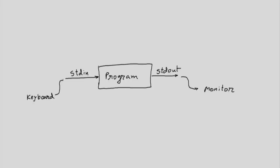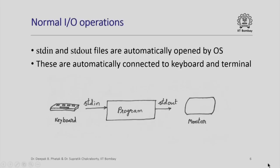That is how we are able to type in our input from the keyboard, read by the program, and the output produced by the program via stdout is connected to the monitor. In short, when our program starts execution, the operating system connects stdin to keyboard and stdout to monitor.